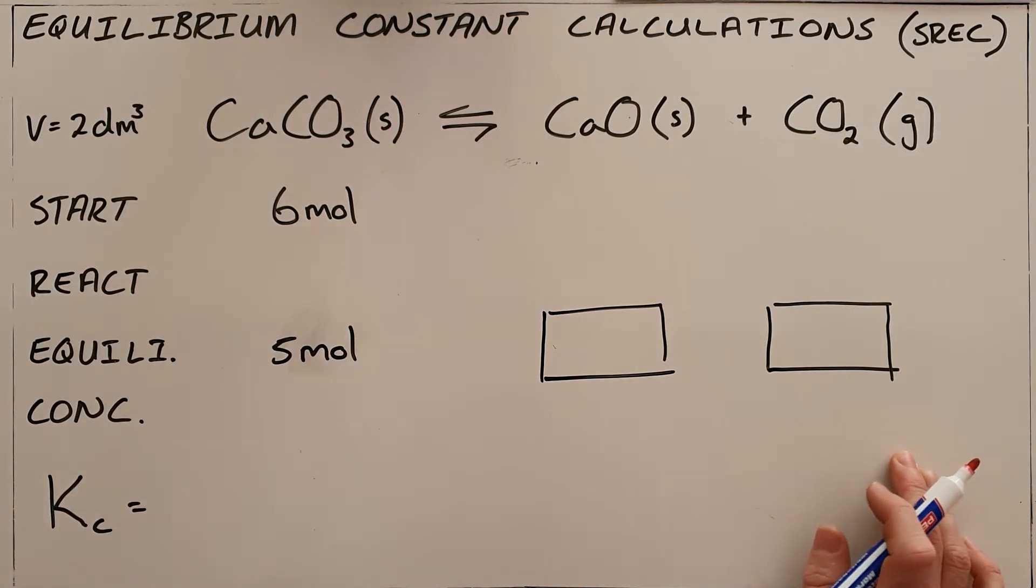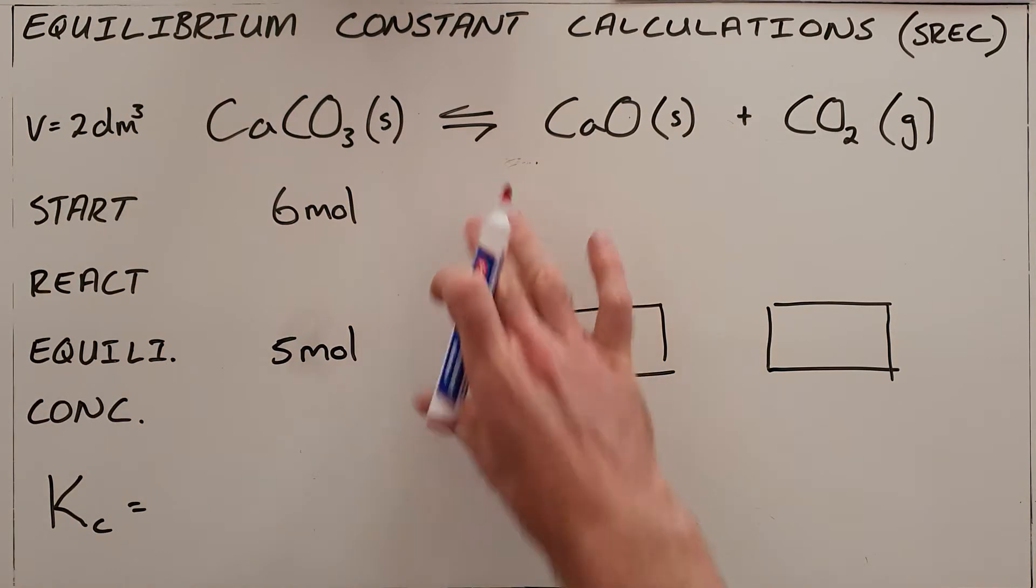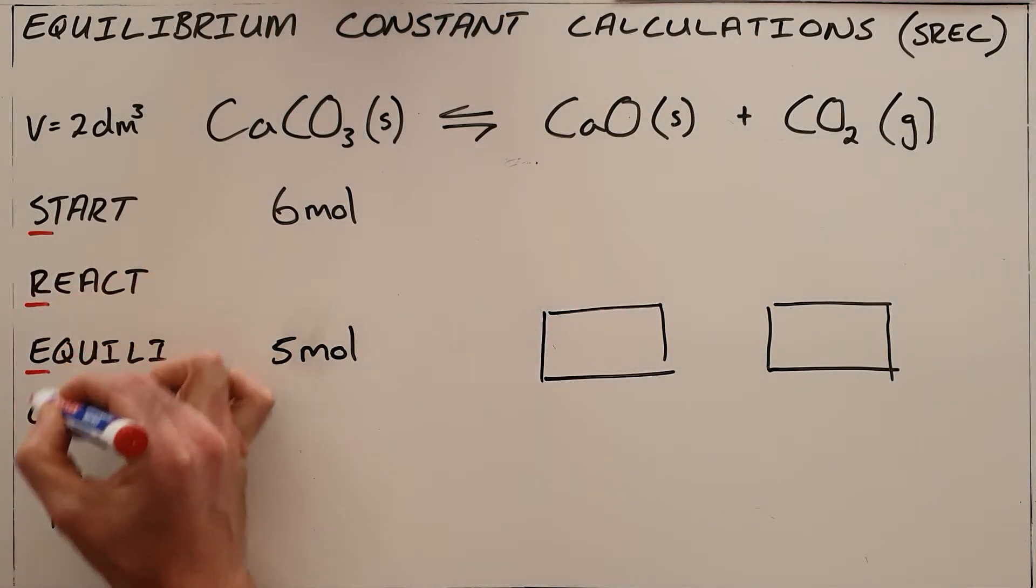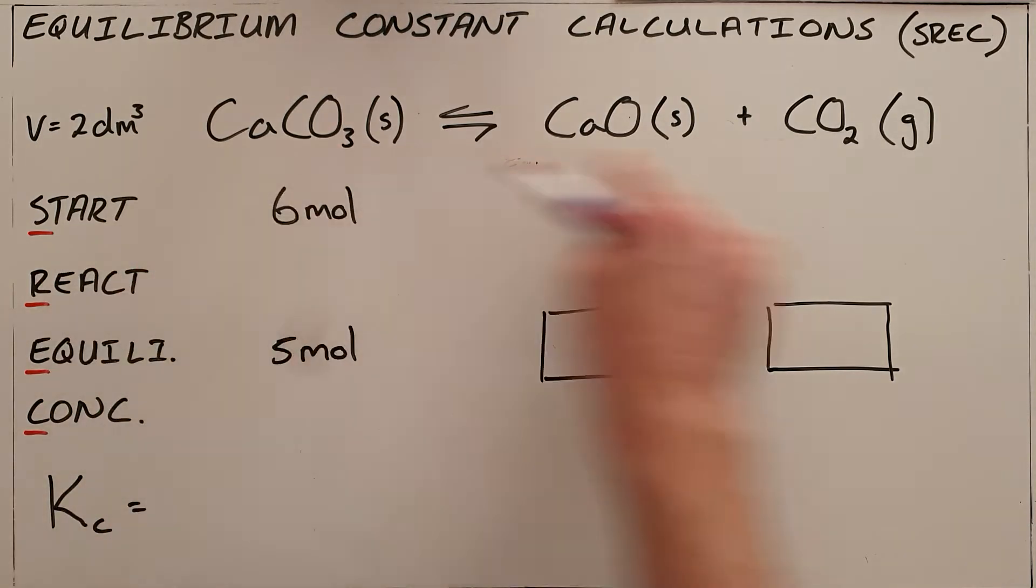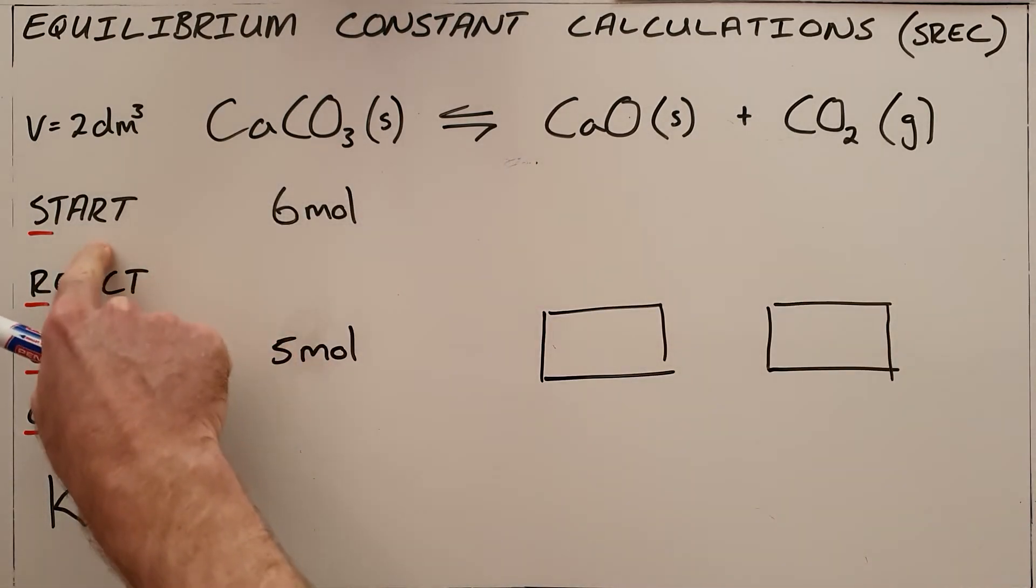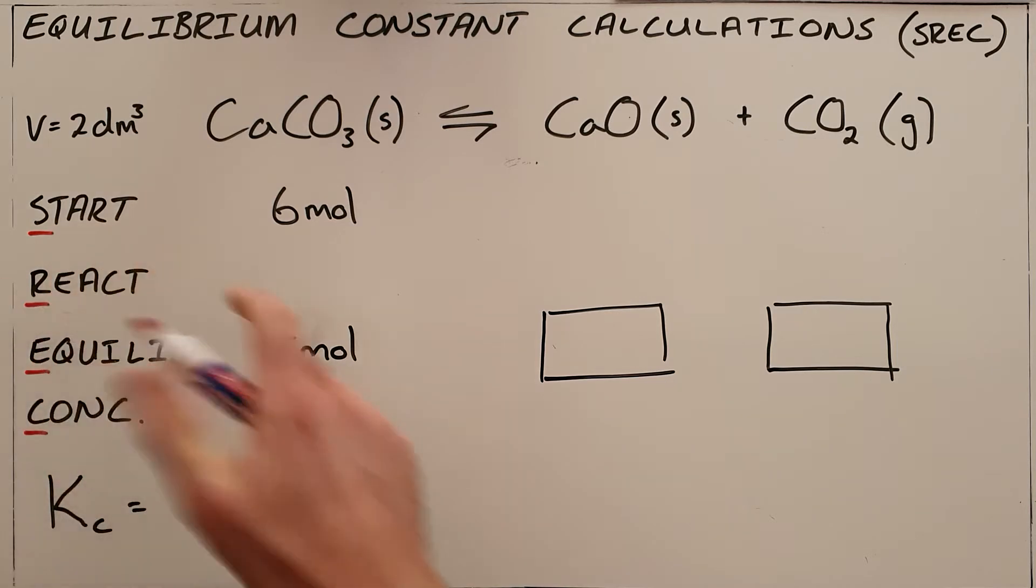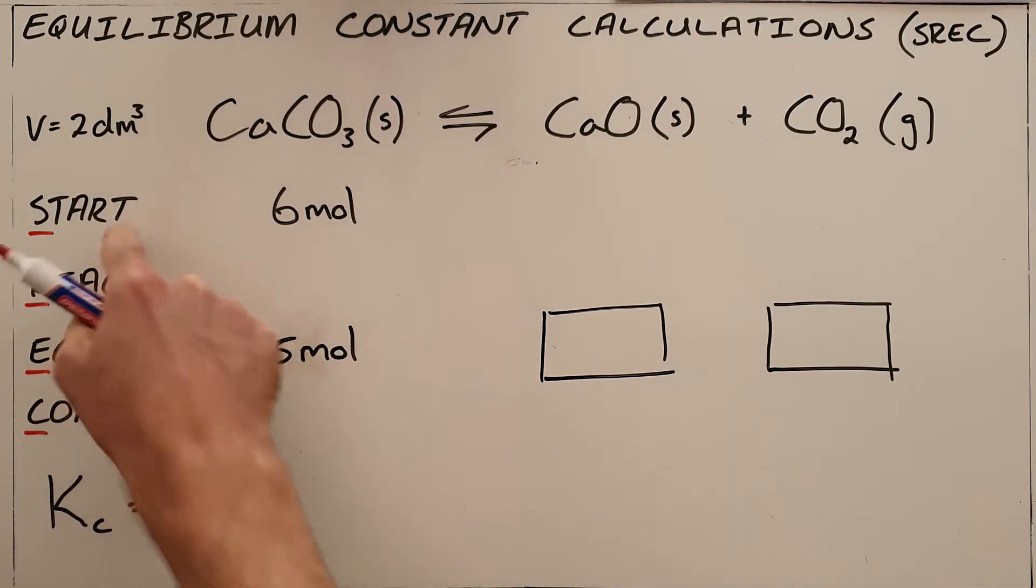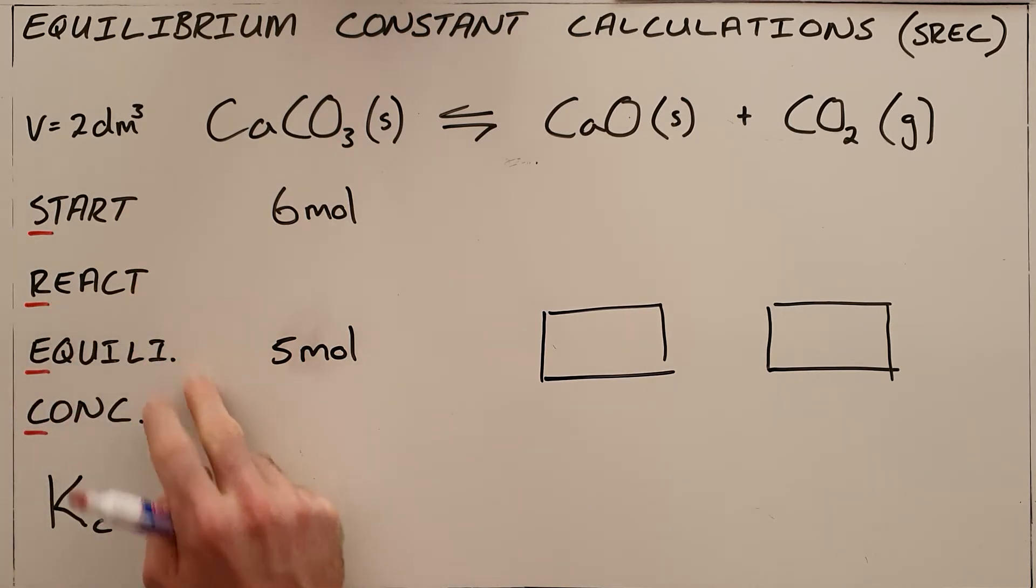The simplest way to do this is to draw up what is called a SHREC table. It is just an easy way of remembering that the SHREC table should have the equation at the top, the amount of substance that you start with for each reagent in the reaction, the amount that reacts, the amount that you find at equilibrium, and then the concentration.